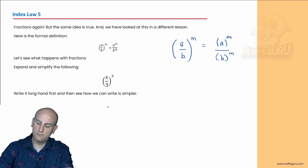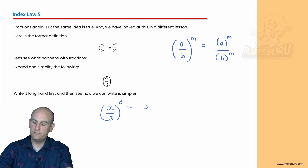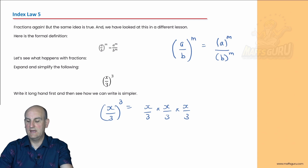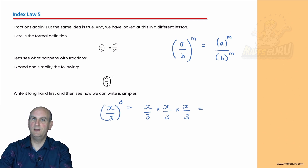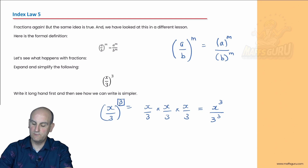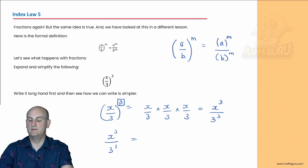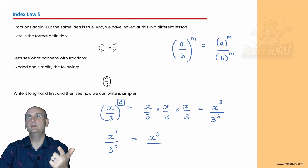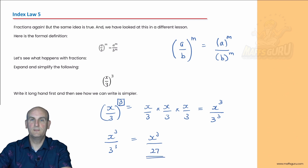We can write this out longhand. We've got (x/3) to the power of 3. Written out longhand: x/3 times x/3 times x/3. When you multiply fractions together, you multiply all the tops together, giving x cubed divided by 3 cubed. Going back to the rule: that outer power of 3 raises everything inside to the power of 3 — so x to the power of 3 divided by 3 to the power of 3. They are the same. We wouldn't leave it as 3 to the power of 3 — we evaluate it: 3 times 3 is 9, times 3 is 27. So the answer is x to the power of 3 over 27.